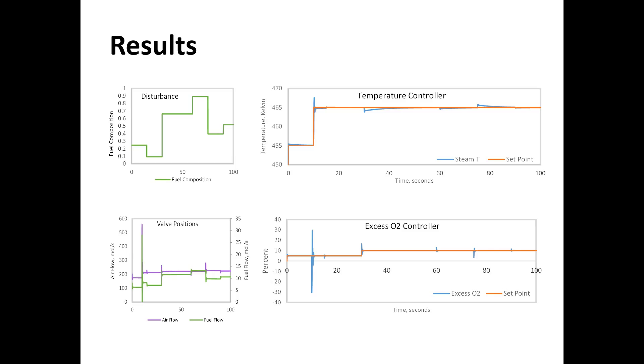The big jumps in the blue lines that you see there in the results are from set point changes and we're okay with those big jumps because they don't happen too often.